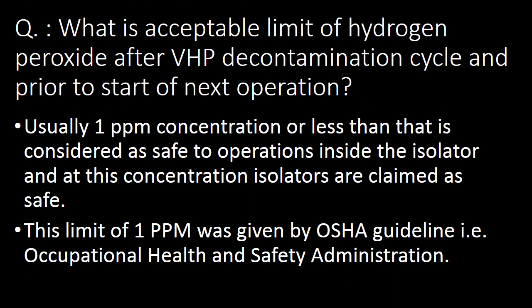Next question: what is the acceptable limit of hydrogen peroxide after the VHP decontamination cycle and prior to the start of the next operation? Usually 1 ppm concentration or less is considered safe for operations inside the isolators, and at these concentrations isolators are claimed as safe. This limit of 1 ppm was given by the OSHA guideline — that is, the Occupational Health and Safety Administration.